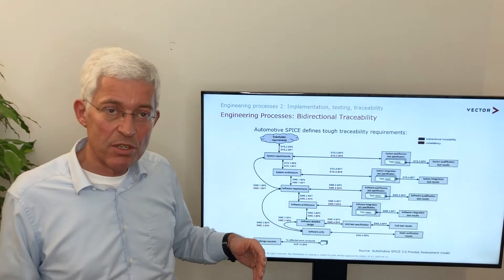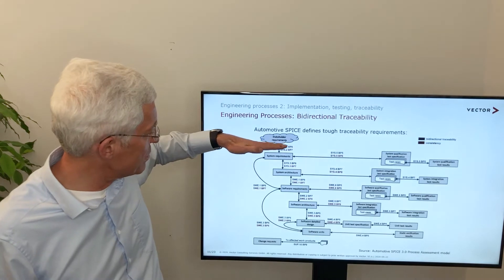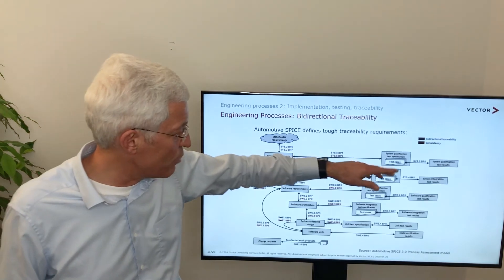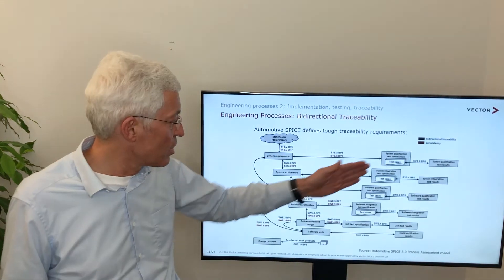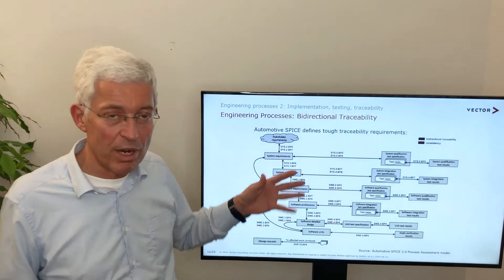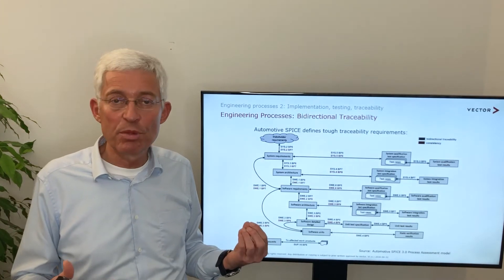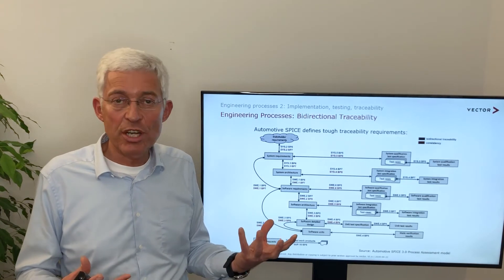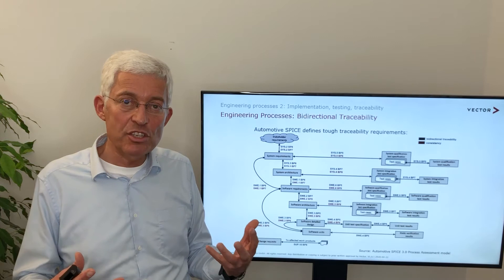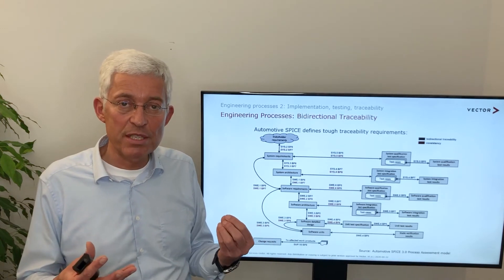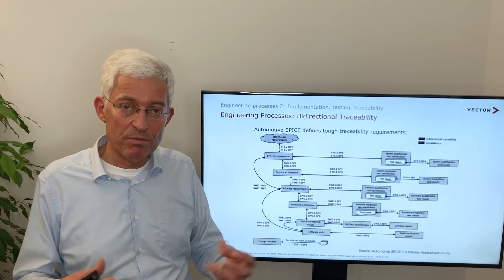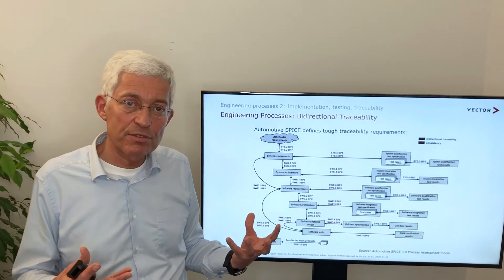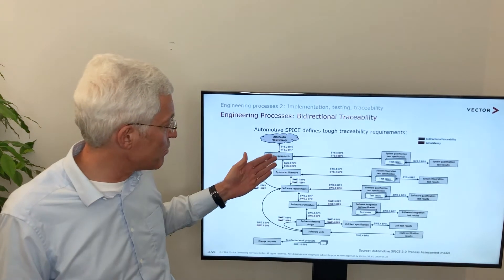Vertically, it means consistency across system level, software level, and implementation. Horizontally, it means we always have some sort of verification and validation which relates to the requirement. It gives us a simple way to check that we have implemented everything consistently. If you think about Agile development — in Agile we have burndown charts and some sort of completeness. The major completeness, which is what we call the definition of done, is that a respective test case is available for the necessary functionality.